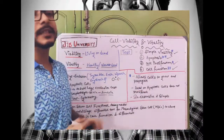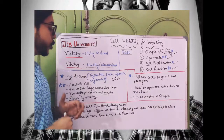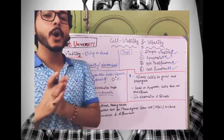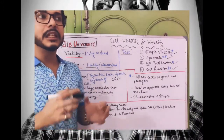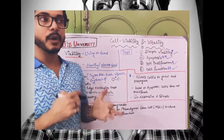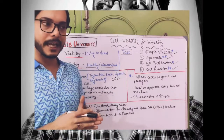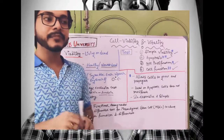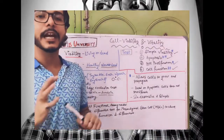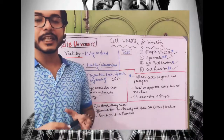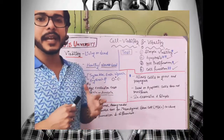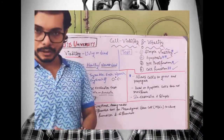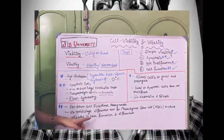The next one is the cell function test — very, very important. Cell function study means you are seeing whether the cell is having its functionality or not. This is generally done to check the functionality of stem cells. Stem cells are those cells from which any kind of cells can be grown — that could be adipocytes or any kind of cell — which has the capability to develop into any kind of cells. For stem cells, a functional assay is needed.